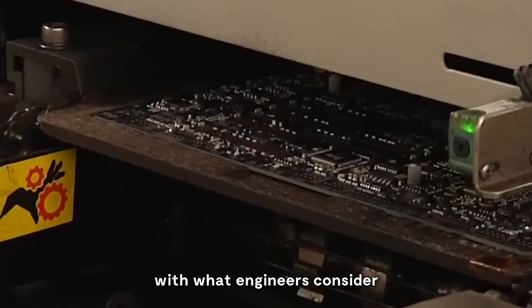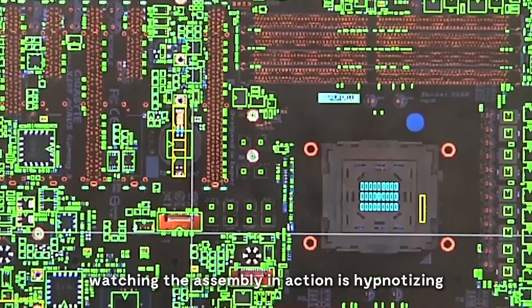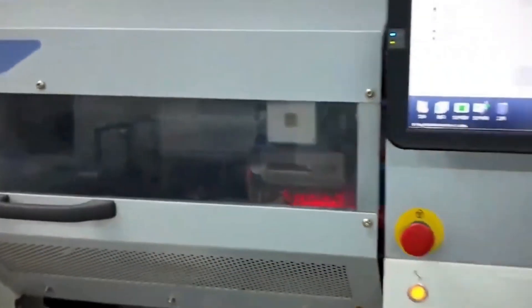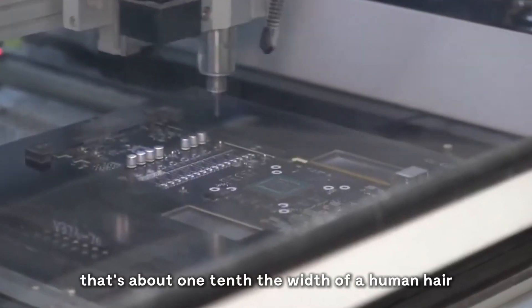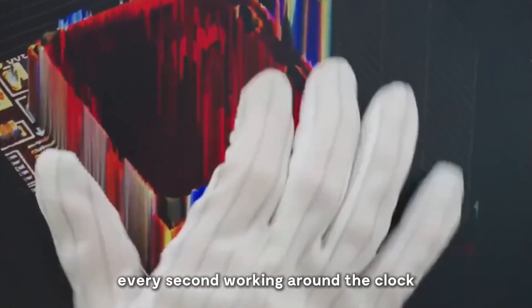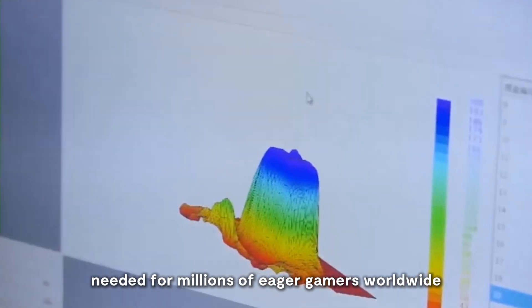The assembly process begins with what engineers consider the brain of the console, the motherboard. This is where those precisely manufactured components find their permanent home. Watching the assembly in action is hypnotizing. Robotic arms move with incredible precision, placing tiny electronic parts using surface-mount technology. These machines operate with an accuracy of 0.01 millimeters. That's about one-tenth the width of a human hair, almost like threading a needle with a laser beam. These mechanical marvels position up to 30 components every second, working around the clock and pausing only for maintenance. This continuous operation helps Sony maintain the production rates needed for millions of eager gamers worldwide.